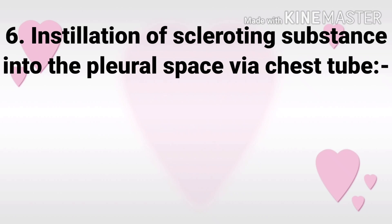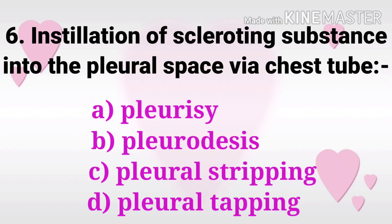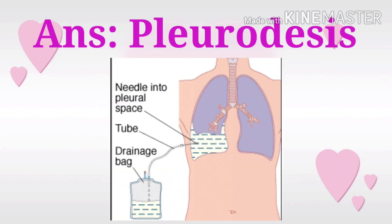Question 6: Installation of sclerosing substances into the pleural space via chest tube? The options are pleurisy, pleurodesis, pleural stripping, and pleural tapping. The answer is pleurodesis.